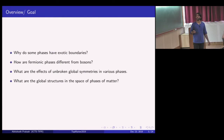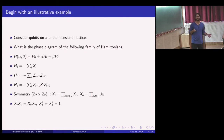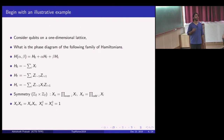More broadly, what are the global structures in this abstract space of phases of matter that seems to have a lot of structure? With this immodest set of goals, let me begin with something very concrete—what I think is a very illustrative and simple example. I'm considering a one-dimensional system whose Hilbert space is two-level systems, like qubits, on a one-dimensional lattice.